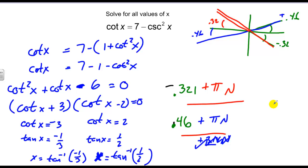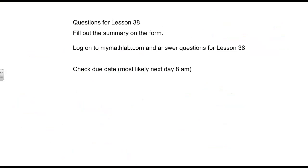When you can't use the unit circle, go to your calculator and take the inverse tangent, sine, cosine, or whatever function you need. I'd recommend always converting secant, cosecant, and cotangent into sine, cosine, or tangent — it just makes life easier. That's all we've got; we'll see you tomorrow.